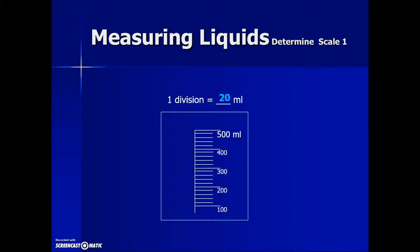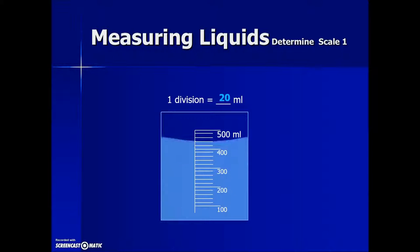Once we know our scale, we can determine the height of a liquid. Remember, we want to read from the bottom of the meniscus. We have liquid to 400 and then two additional tick marks above that, each worth 20 milliliters, for a total of 440 milliliters.